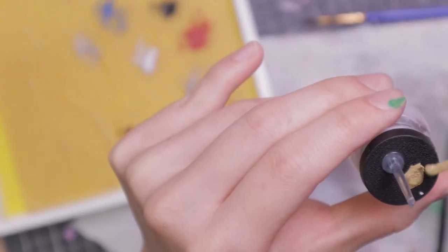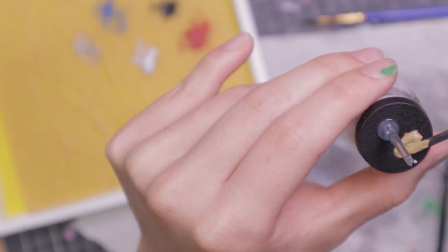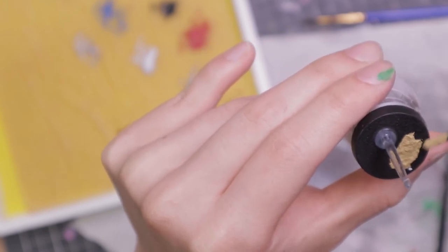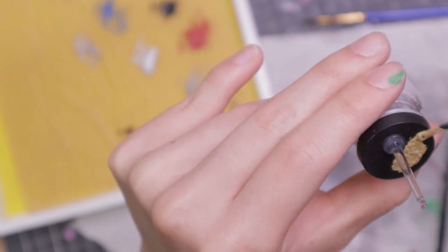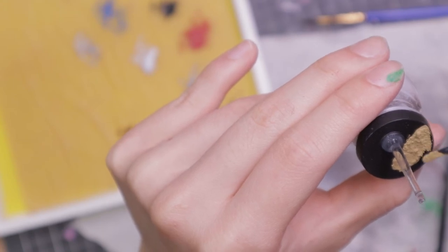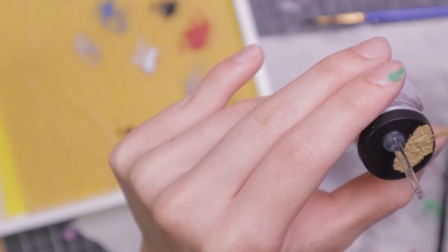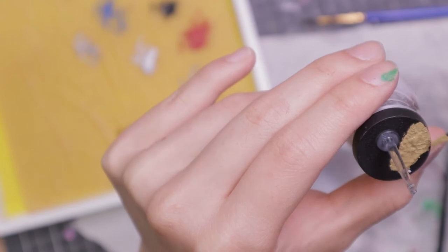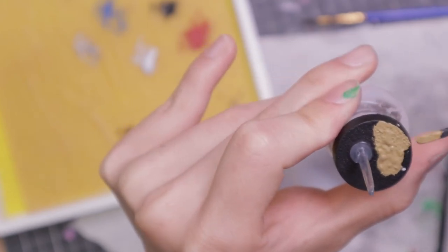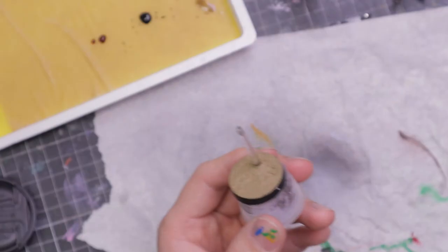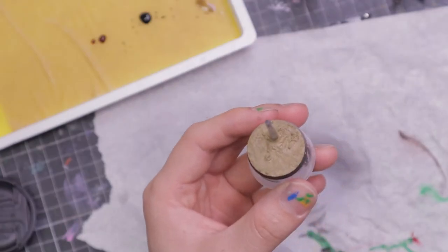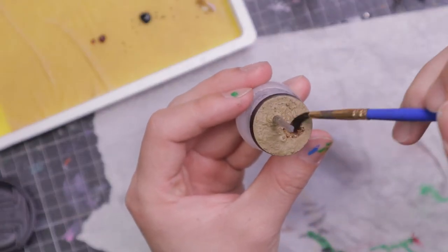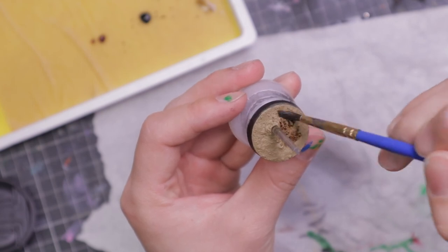While Boba dries, I'm going to do the basing. I'm using desert sand because from the box art, he's in Tatooine, so I thought it was very fitting. Now I'm going to apply some brown wash to the base to shade in the detail.